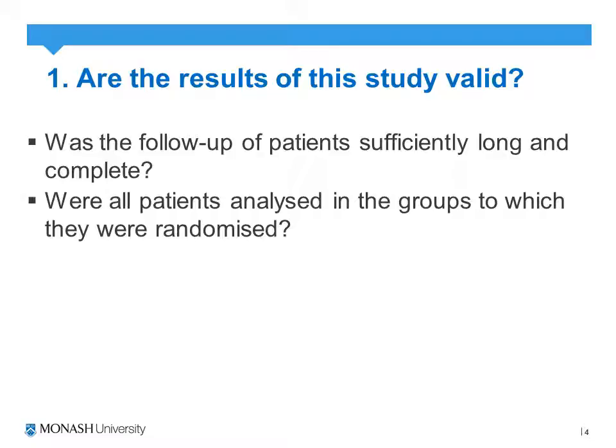Were all groups analysed in the groups to which they were randomised? This looks specifically at intention-to-treat analysis — that is, if we had drop-outs, did the investigators account for those drop-outs using an intention-to-treat analysis? We might also have patients who cross over; a patient may have identified they were in the control group and refused to continue unless allocated to the intervention group, which has obvious issues around compliance.